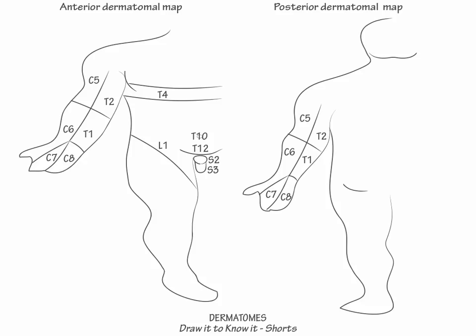Now show the sloping dermatomal coverage of the anterior lower extremity. First indicate that L2 begins its descent from the supra-lateral anterior lower extremity, then indicate that the coverage of L3 and L4 crosses the knee, then show that L5 covers the great toe, and that S1 covers the ankle and little toe.